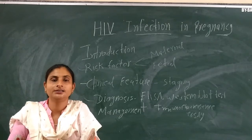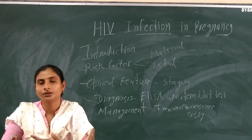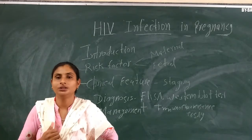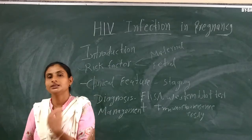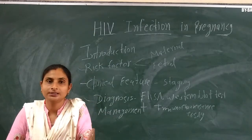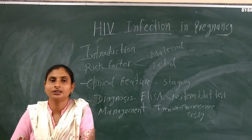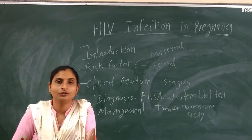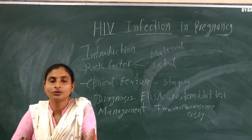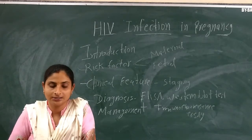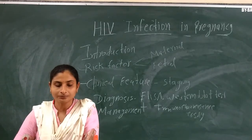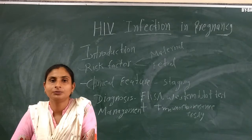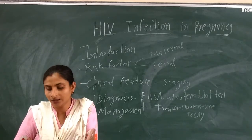The ELISA testing protocol requires three tests. If all three tests are positive, the patient is HIV positive. If two tests are negative and one is positive, the result is HIV negative. If one is negative and two are positive, further confirmation is needed. A single positive test alone is not sufficient to confirm the diagnosis.